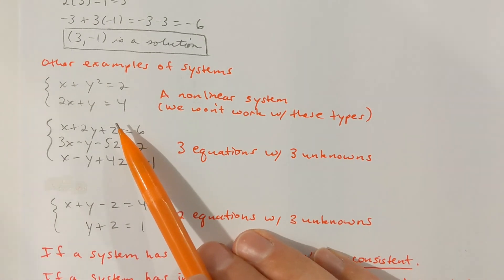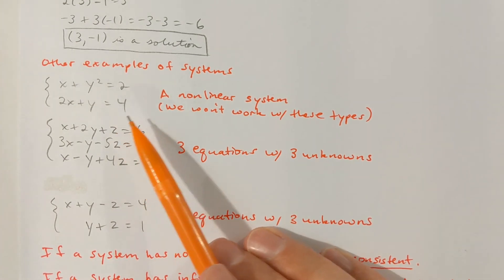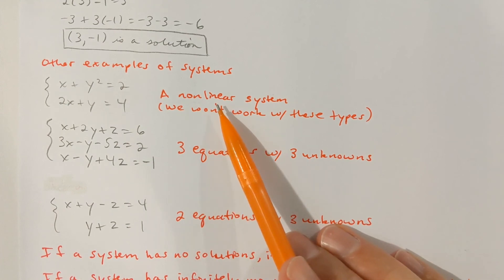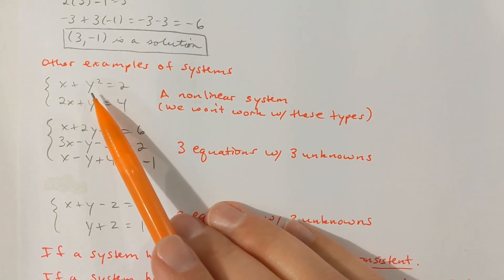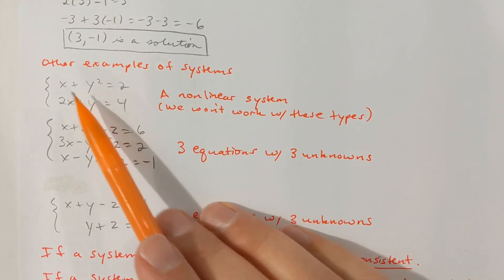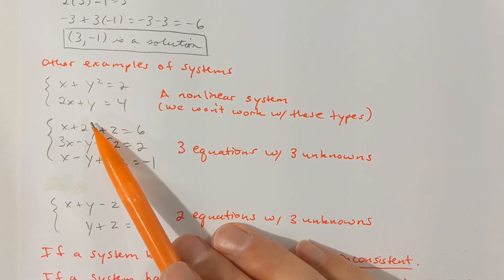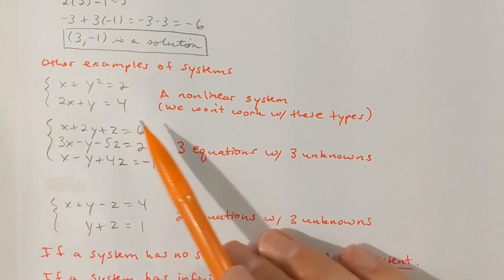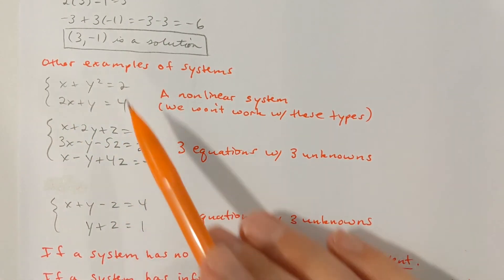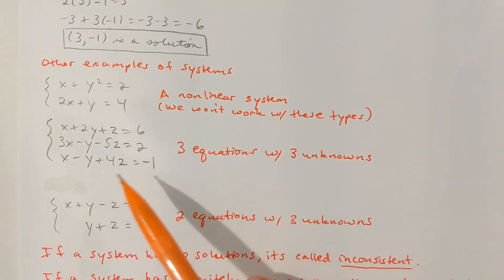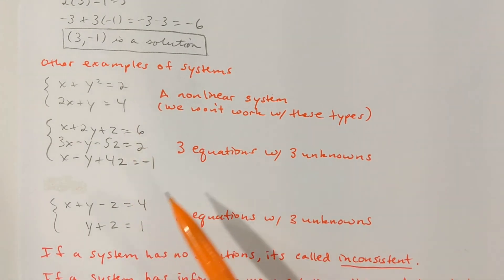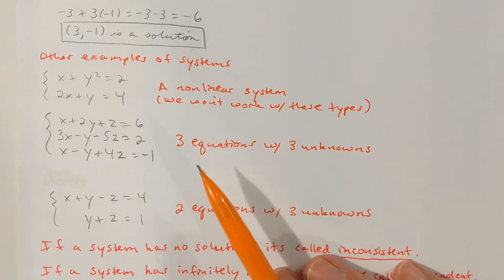Here's another system of two equations with two unknowns. This would be called a nonlinear system — we're not going to work with any of these. We're not going to have to worry about powers of x, or 1 over x, or e to the x, or ln of x. Those are not linear systems — those are not lines. Our focus here is just on linear systems.